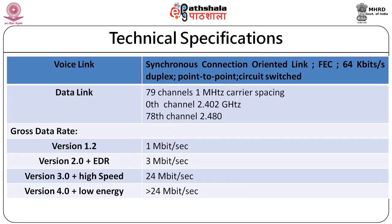The data link consists of 79 channels with 1 MHz carrier spacing. The 0th channel is 2.402 GHz and the 78th channel is 2.480 GHz. Data rates differ across Bluetooth versions: version 1.2 offered 1 Mbps; version 2 plus EDR increased to 3 Mbps; version 3.0 with high speed reached 24 Mbps; and version 4.0 with low energy achieves greater than 24 Mbps, with increasing sophistication in both data rate and power consumption.